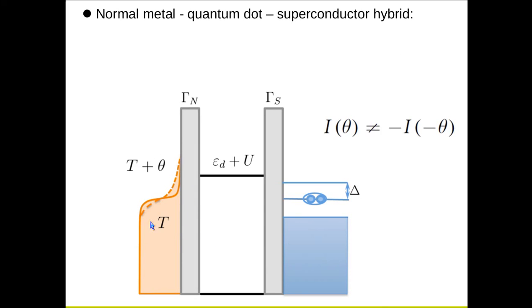Our system is a normal metal-quantum dot-superconductor hybrid, where the quantum dot has a single level epsilon D, tunable by a gate potential. We consider the Coulomb interaction in the mean field approximation, in which case U is a function of the temperature gradient. The superconductor can be described by the energy gap delta, and we apply thermal gradient only to the normal metal.